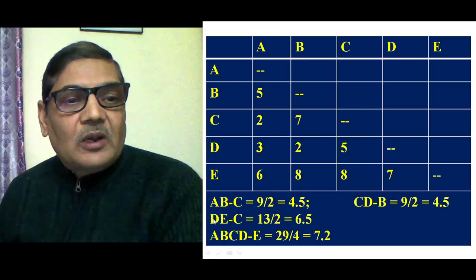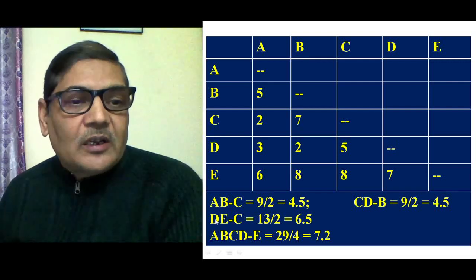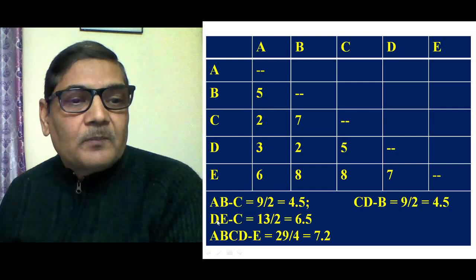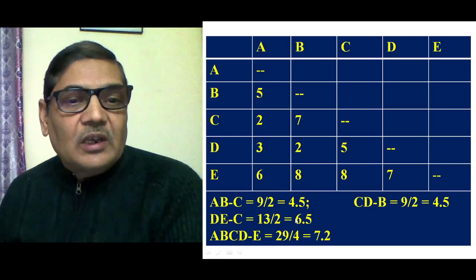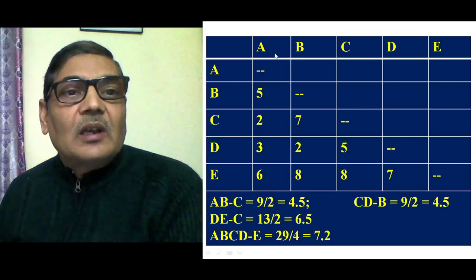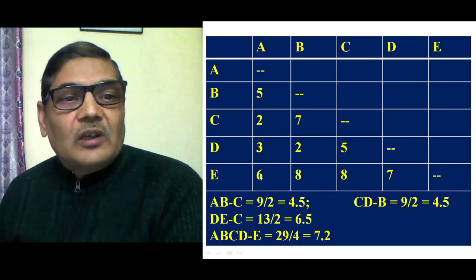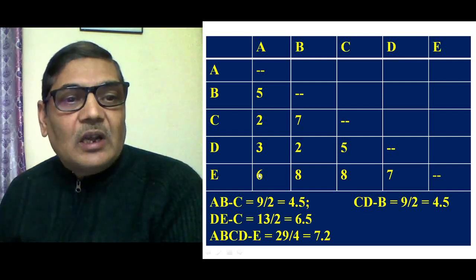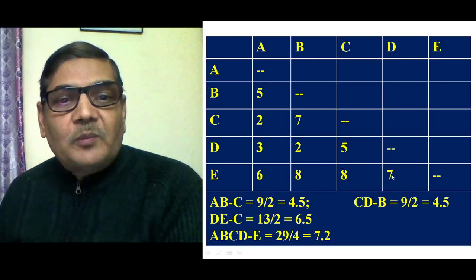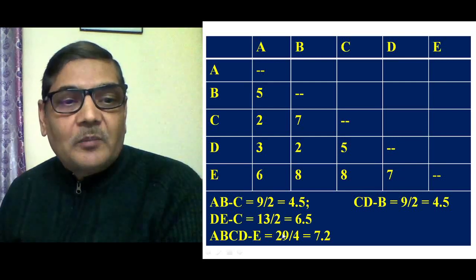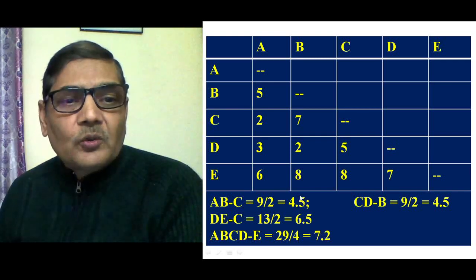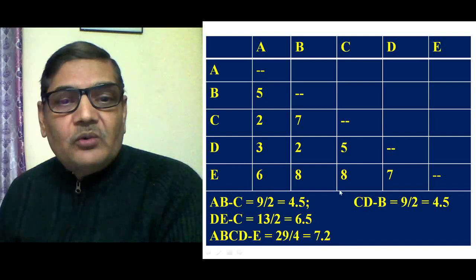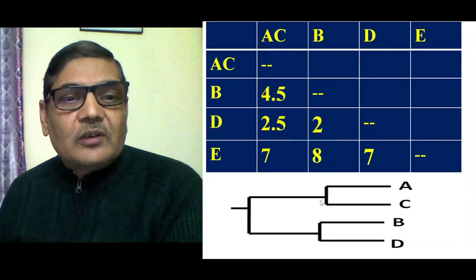We can also calculate the similarity between D, E and C, which comes to 6.5. Then, for the ABCD cluster's relation with the DE cluster, all four values are added and divided by 4, giving 7.2. Based on these values, we can finally construct the table.